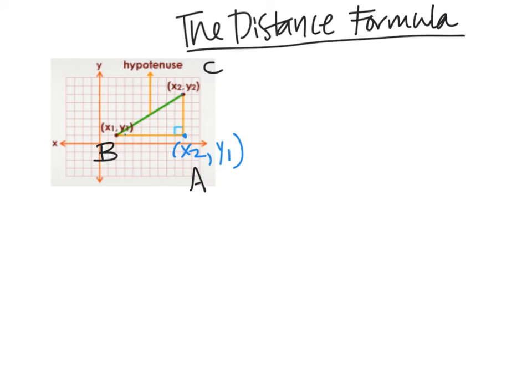So if I were using the Pythagorean theorem here, I would say that AB squared, that's this line right here, plus AC squared is equal to BC squared.